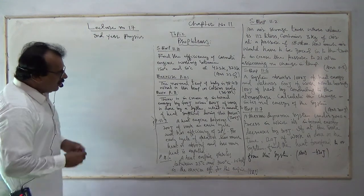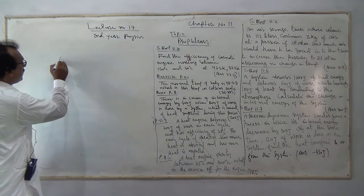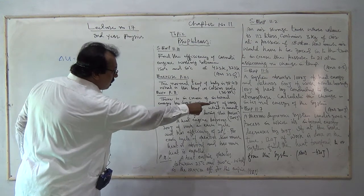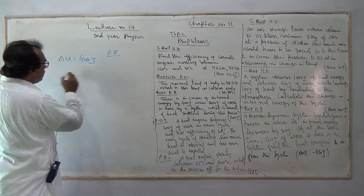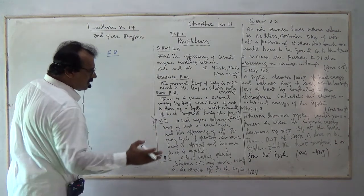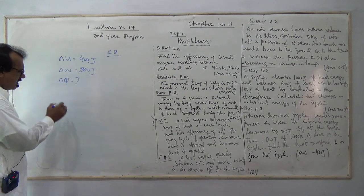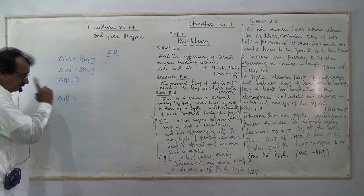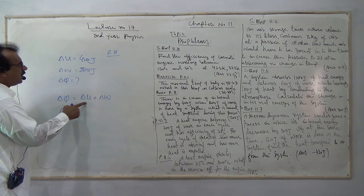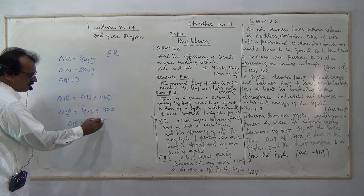Problem number 8 exercise: There is an increase in internal energy of 400 Joules — a positive value. When 800 Joules of work is done by the system — a positive value — what is the amount of heat supplied during this process? The first law of thermodynamics states: heat supplied equals increase in internal energy plus work done by the system.